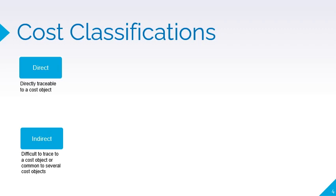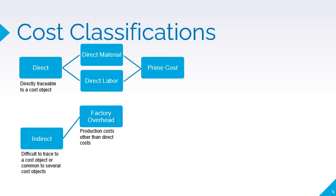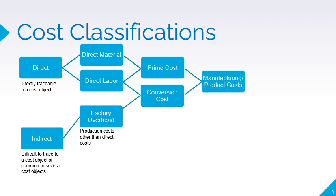Direct costs can be broken down into direct materials and direct labor. Factory overhead pertains to indirect materials, indirect labor, and other manufacturing costs that are neither direct materials nor direct labor. Direct materials and direct labor are referred to as prime costs, and direct labor and factory overhead are referred to as conversion costs. Direct materials, direct labor, and factory overhead compose the manufacturing costs, which are incurred in the production of goods or performance of services.